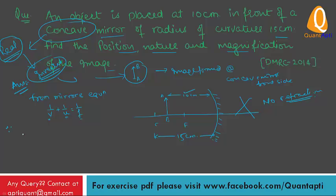F, we will learn a relation. F is equal to R by 2. This is the relation between focal length and radius of curvature. Focal length is always half of the radius of curvature.